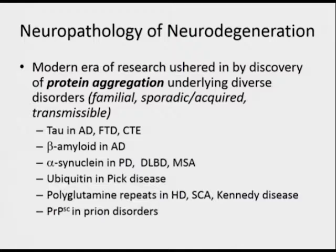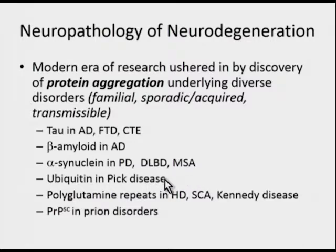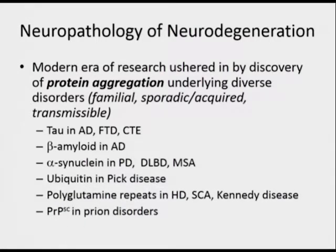Starting with the neuropathology of neurodegeneration, the modern era of research has ushered in understanding about protein aggregation underlying diverse disorders, including familial, sporadic, and acquired or transmissible diseases. Examples include tau in Alzheimer's disease, frontotemporal dementia, and chronic traumatic encephalopathy; beta-amyloid in Alzheimer's disease; alpha-synuclein in Parkinson's disease, diffuse Lewy body disease, and multiple system atrophy; ubiquitin in Pick's disease; polyglutamine repeat disorders in Huntington's disease, spinocerebellar atrophies, and Kennedy disease; and scrapie prion protein in prion disorders.